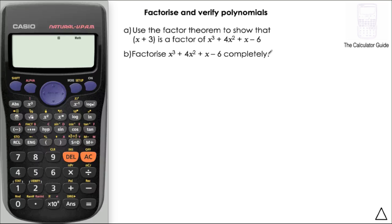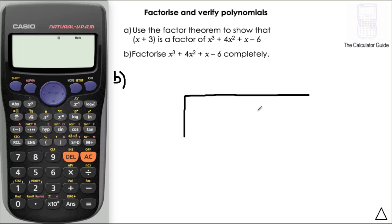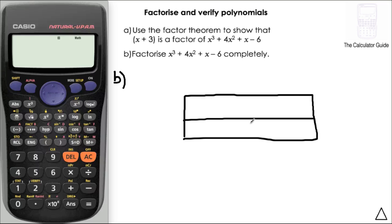Part B of the question is to factorise x cubed plus 4x squared plus x minus 6 completely. This is the main bit I really wanted to show you — how to do this without using the long division method that a lot of textbooks show you. I'm going to exploit the relationship between multiplication and division, and I'm going to draw a grid to help me out with this.